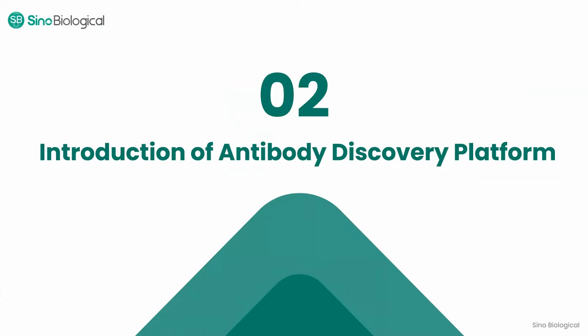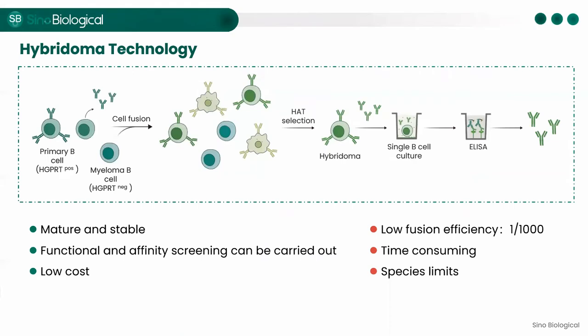With a background of how antibodies are produced, let's take a look at how antibodies are deliberately developed on various platforms. Hybridoma technology has been around for almost 50 years since its invention in 1975. As of now, hybridoma is still the most commonly used technique for antibody production.